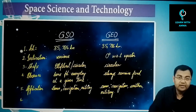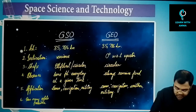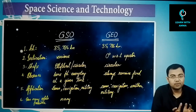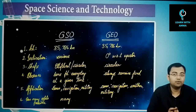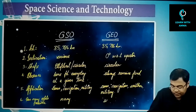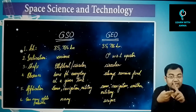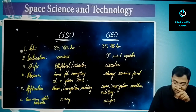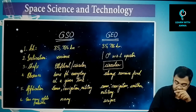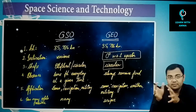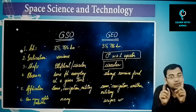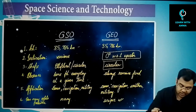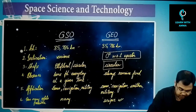One final comparison point is the number of possible orbits. For geosynchronous, there are many possibilities — changing inclination or eccentricity creates a new orbit. But geostationary orbit is one single unique orbit: height is fixed at 35,786 km, shape is always circular, inclination is always zero degrees. Since all three factors are fixed, there is only one possible geostationary orbit.